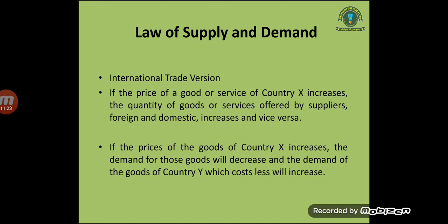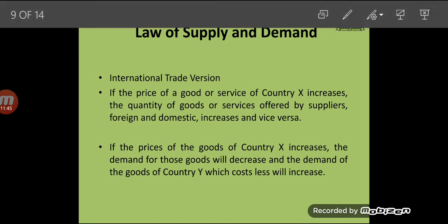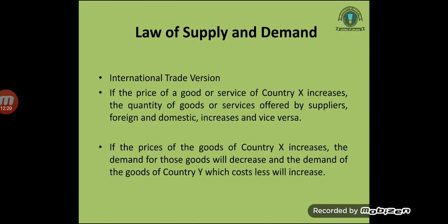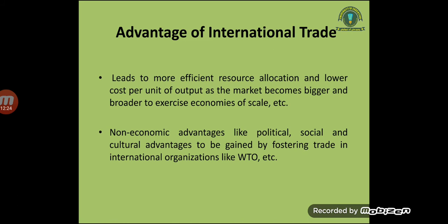The law of supply and demand in international trade: if the price of a good or service of Country X increases, the quantity of goods or services offered by suppliers — foreign and domestic — increases, and vice versa. If the prices of goods of Country X increase, the demand for those goods will decrease and the demand for goods of Country Y, which cost less, will increase. This is the law of supply and demand.